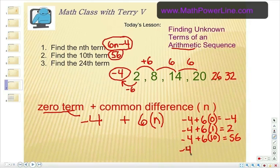Negative 4 plus 6 times 24. Let's do a quick multiplication problem here. 24 times 6. 24. Carry the 2. 12 plus 2 is 14. Alright, 144.